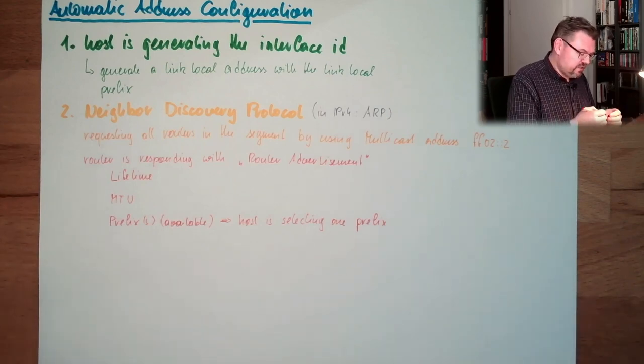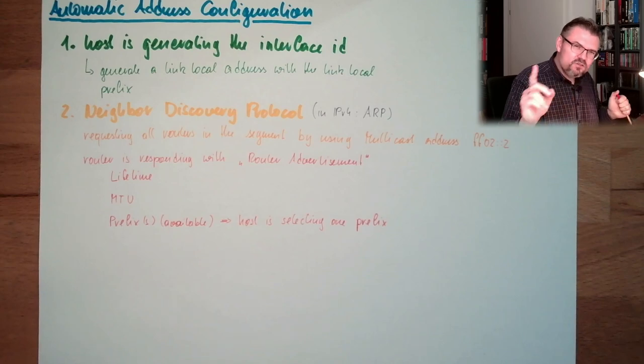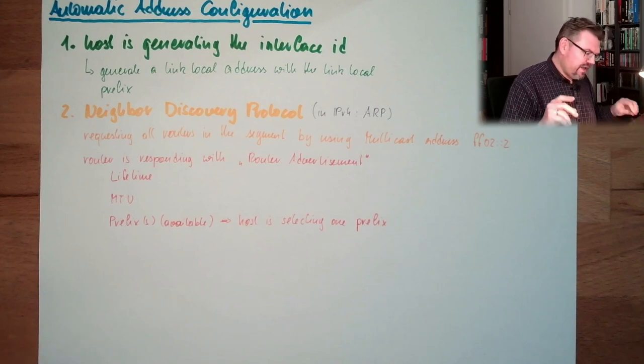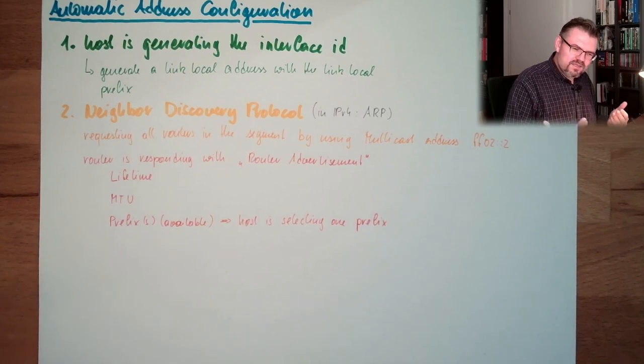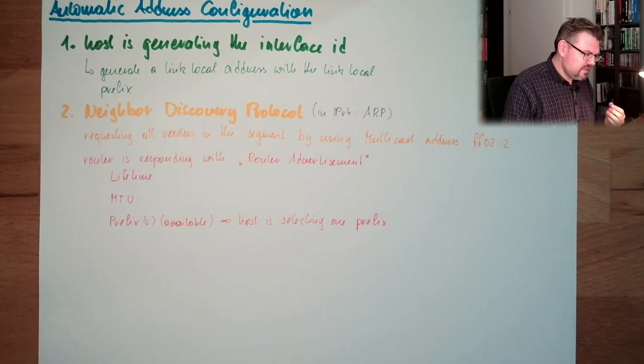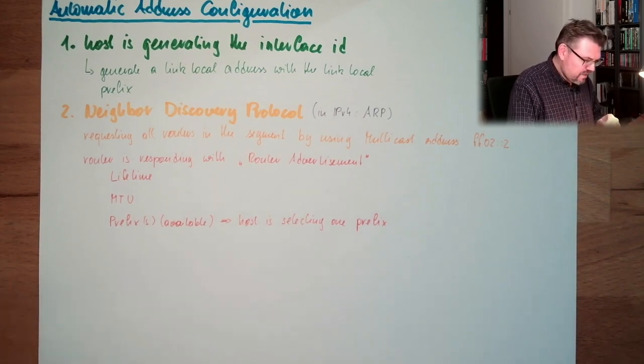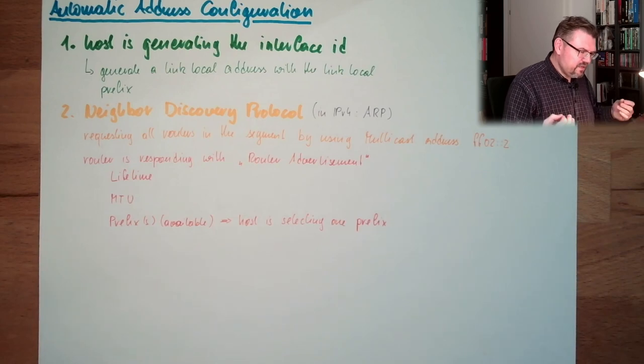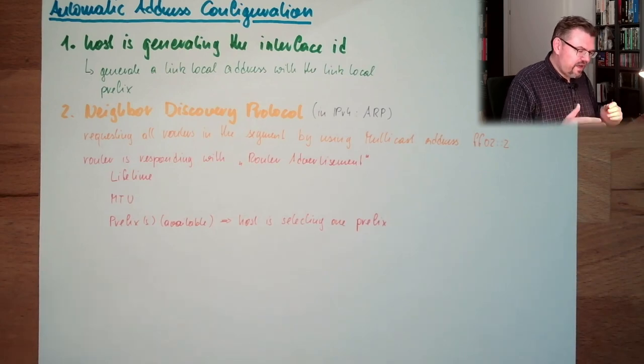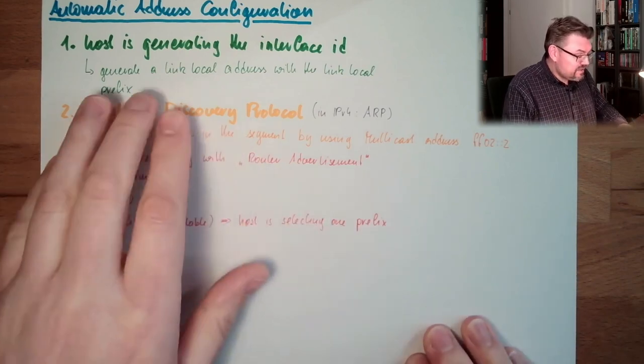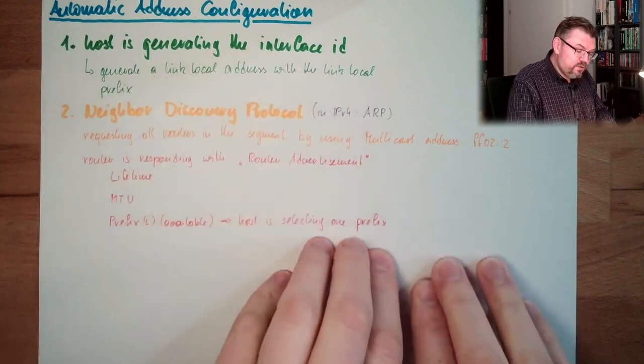And the host is selecting one of these prefixes. There is no knowledge at any central point which a host, that the host is deciding on its own. So it's stateless. It's called stateless. The host is selecting one prefix and then it's using the same interface ID and this prefix. And ta-da! We have our final internet protocol version 6 address.